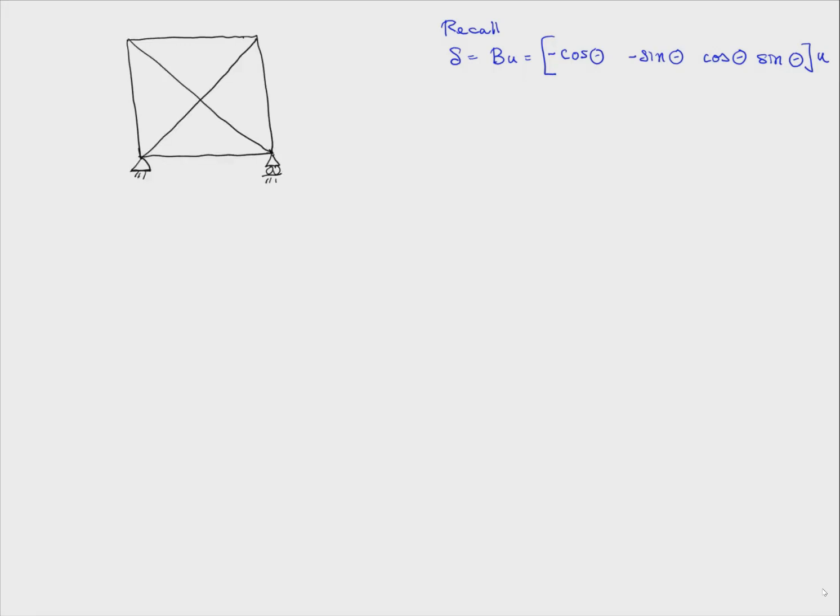Let's consider an example truss like this. We number the joints 1, 2, 3, 4. We number the members 1, 2, 3, 4, 5, 6.